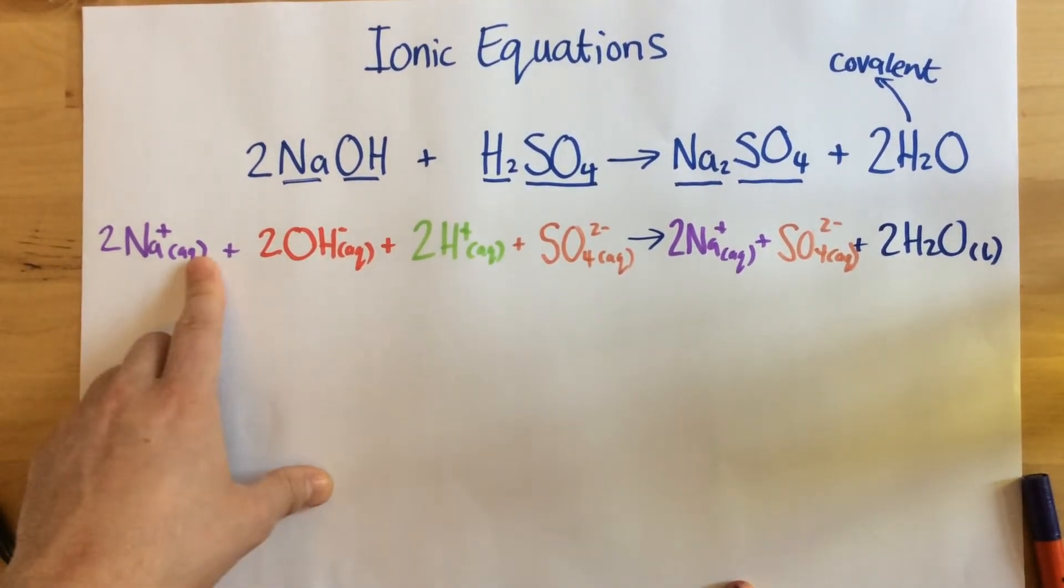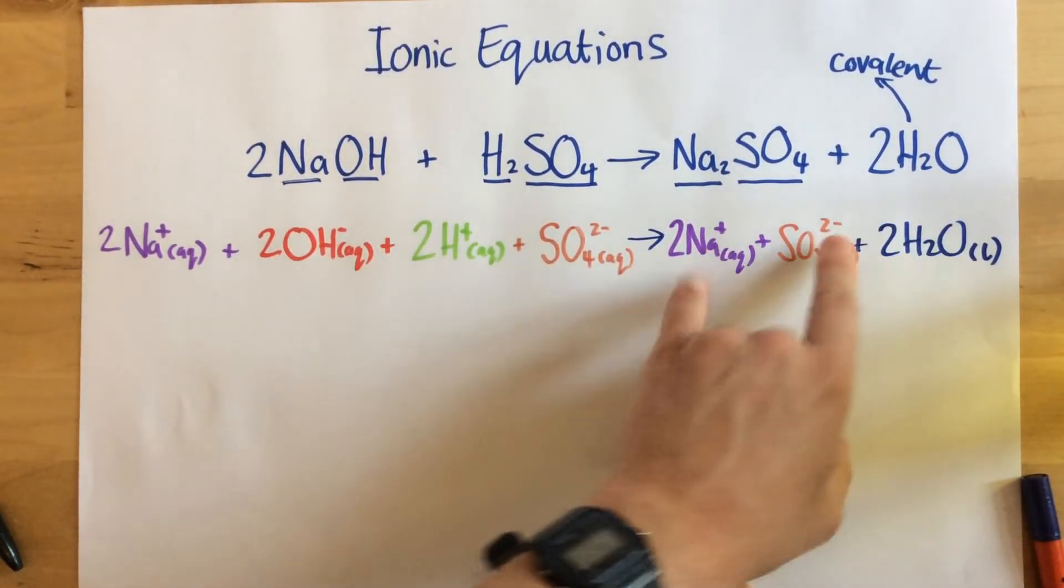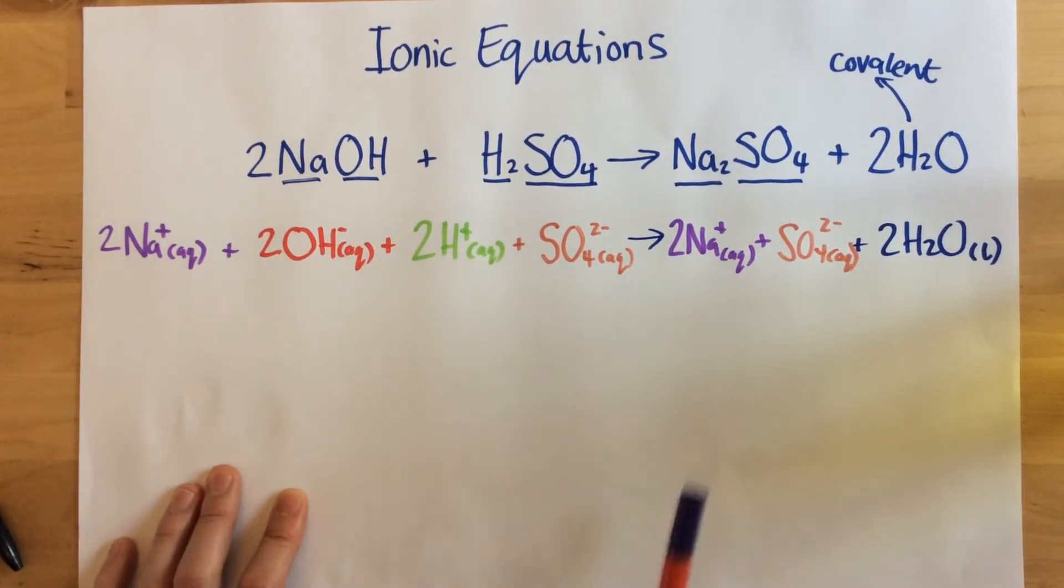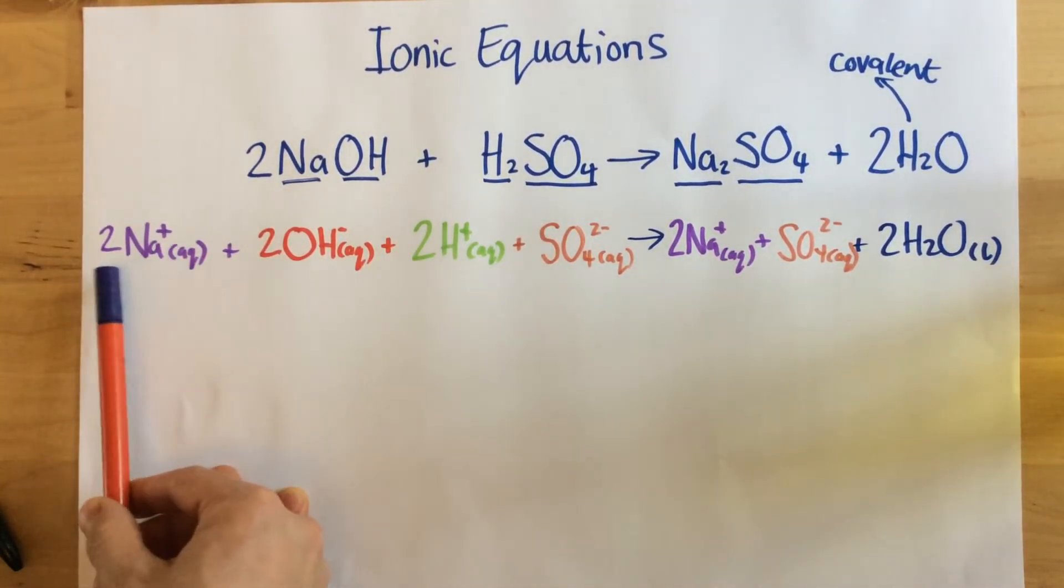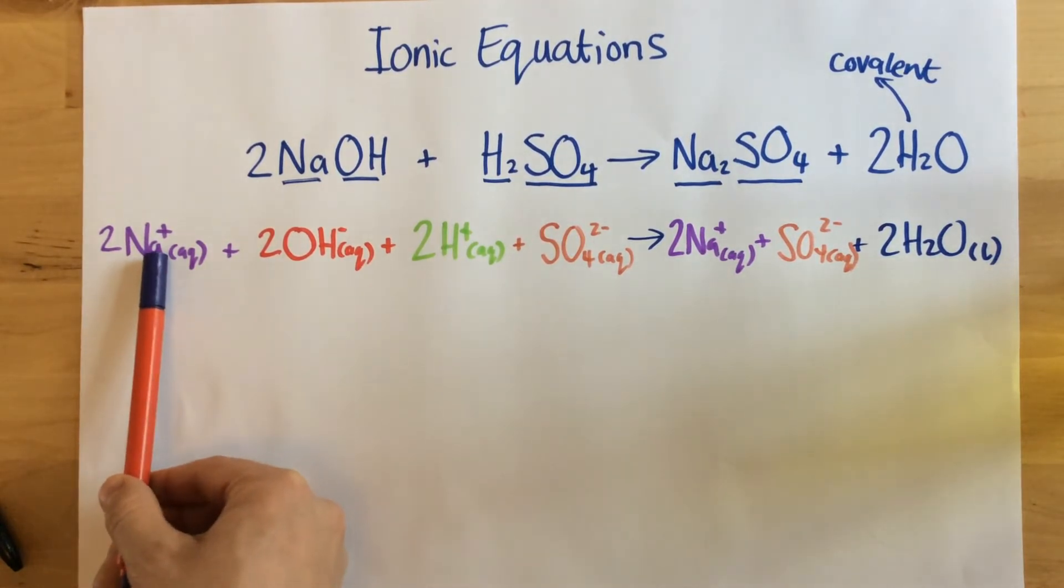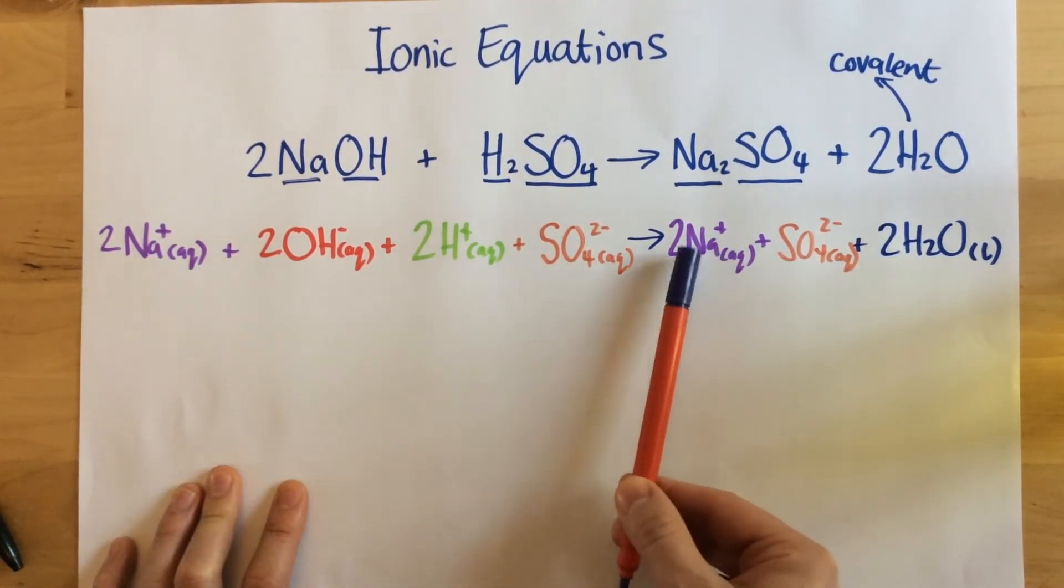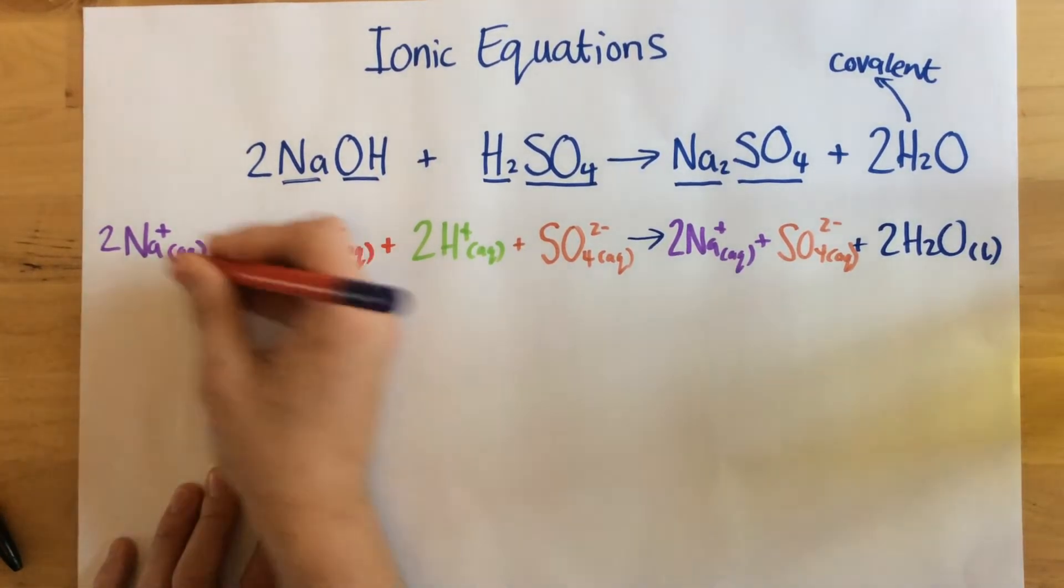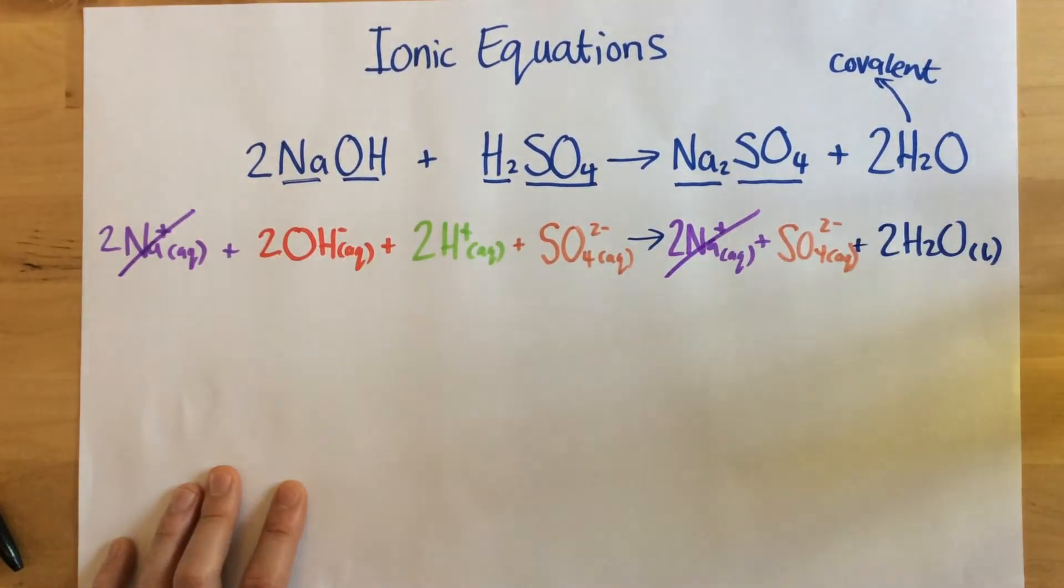So what I've now got is all of my different ions that are involved in this equation. My next step is to go through and cancel out the ions that are the same on both sides of the equation. So if I have a look at this, 2Na+, I can see I've also got 2Na+ on this side, so my sodium hasn't changed. So as a result, I'm going to get rid of both of those.